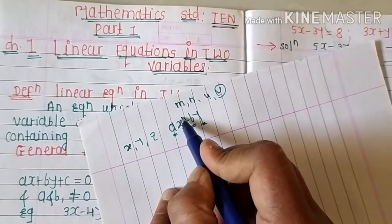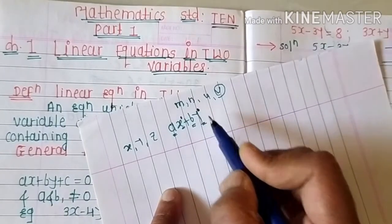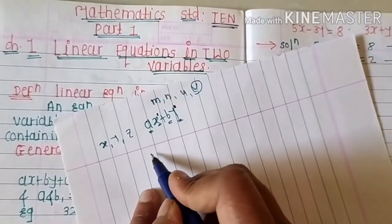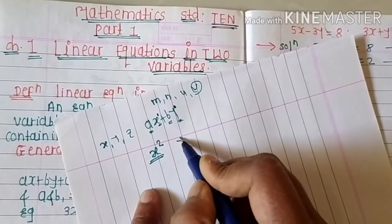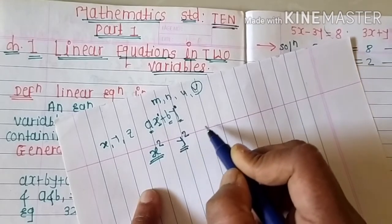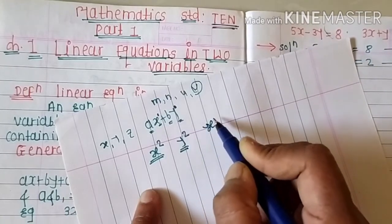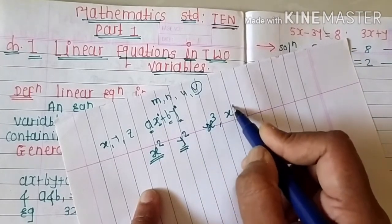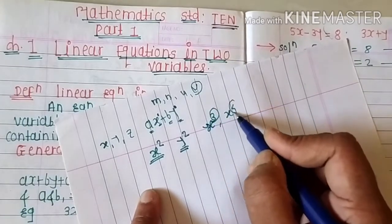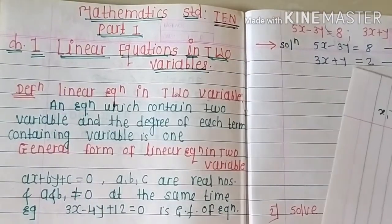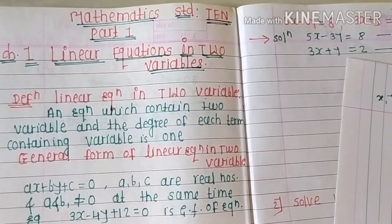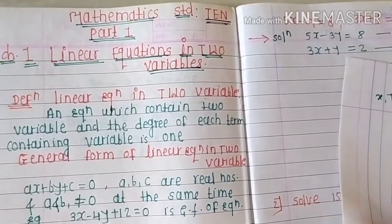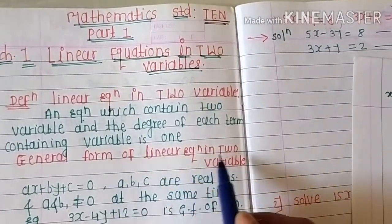The degree of each term containing a variable is one. If x is raised to the power of one, the degree is one. If x is raised to the power of two, the degree is two. If y is raised to the power of two, degree is two. Similarly x³ has degree three, x⁴ has degree four. In this chapter we study linear equations where the degree is one.